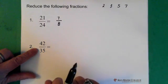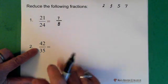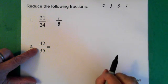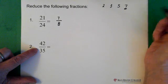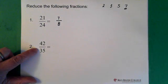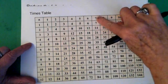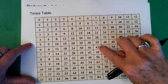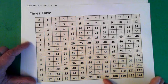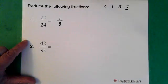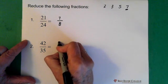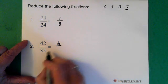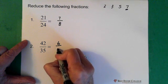Forty-two and thirty-five — with these numbers you really have to be aware of your times tables. It's seven — both of these numbers are divisible by seven. Looking at the times tables down the seven line, thirty-five and forty-two are both there. So divide forty-two by seven and get six, divide thirty-five by seven and get five.